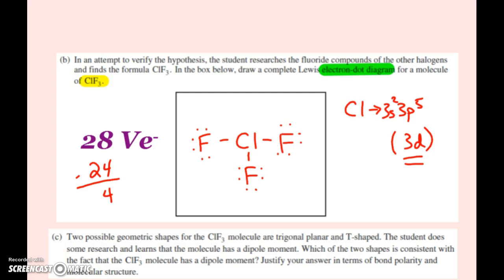Any element that has d orbitals, d sublevel available, can violate the octet rule. Phosphorus, sulfur, chlorine are classic examples, and then any other big elements after that. Remember boron can violate it by only needing six because it's tiny. But phosphorus, sulfur, and chlorine are fairly common.